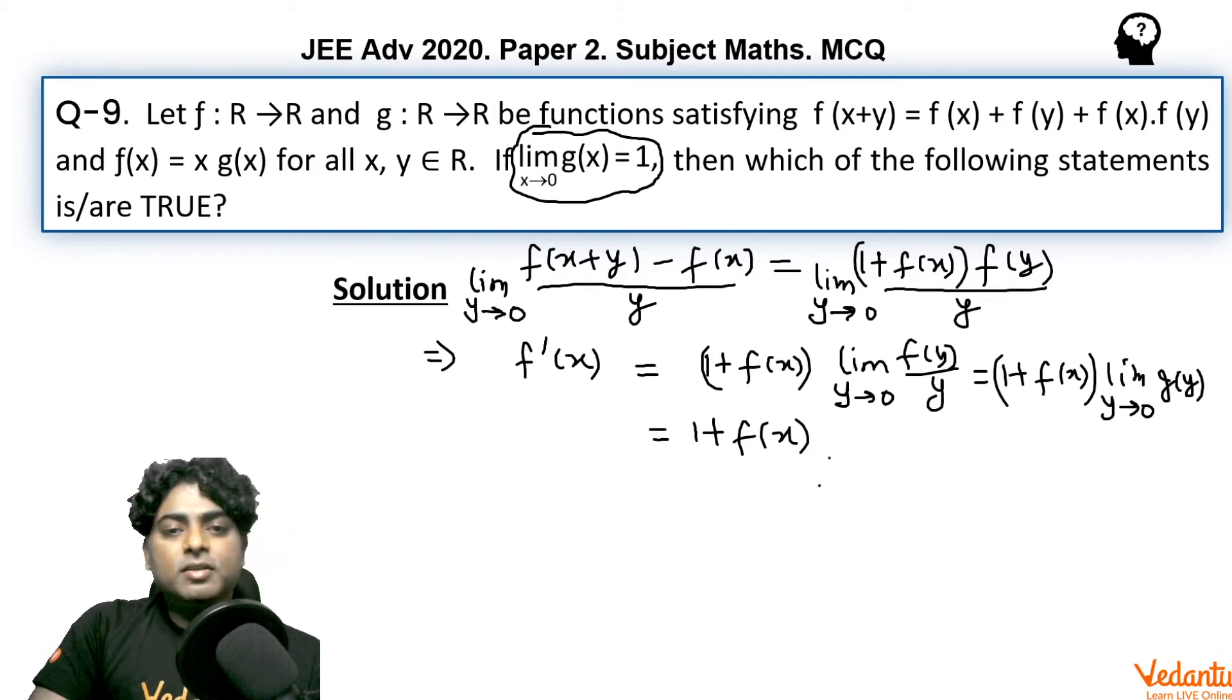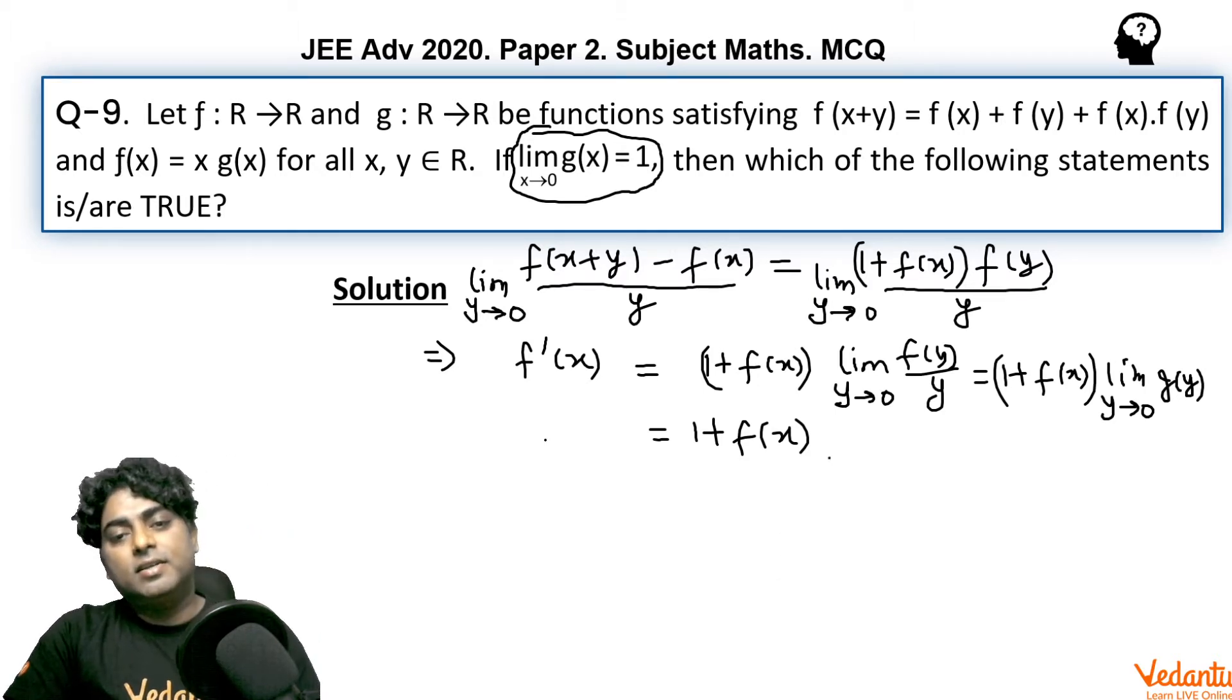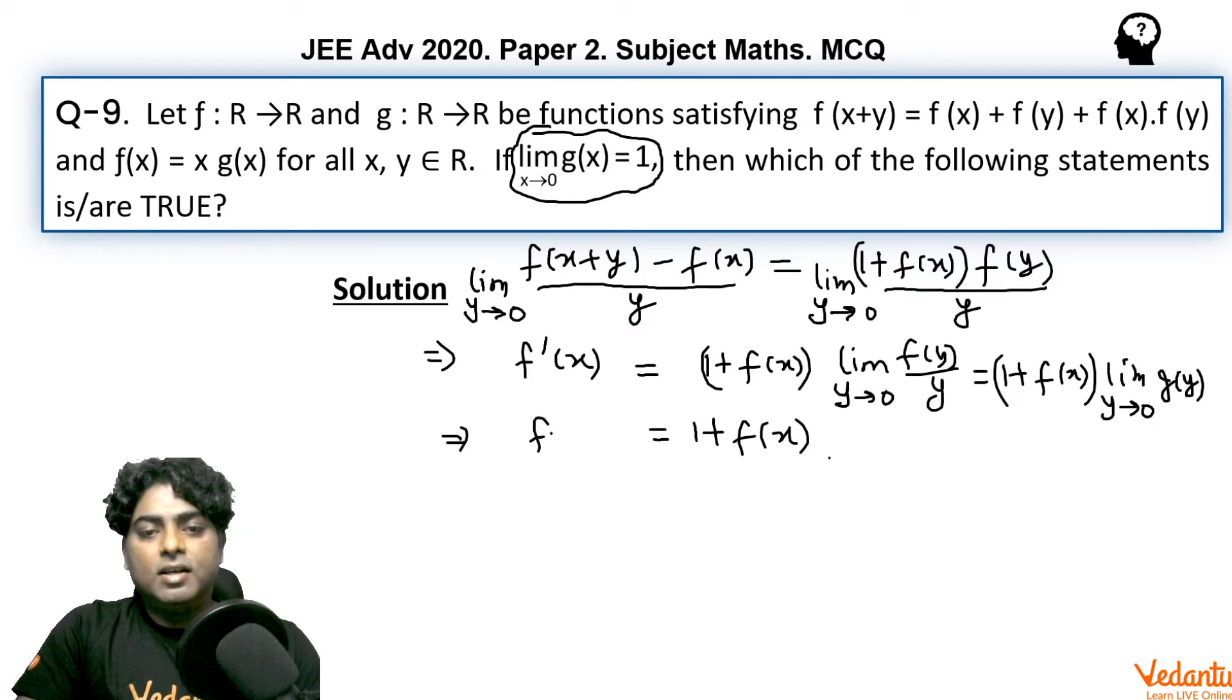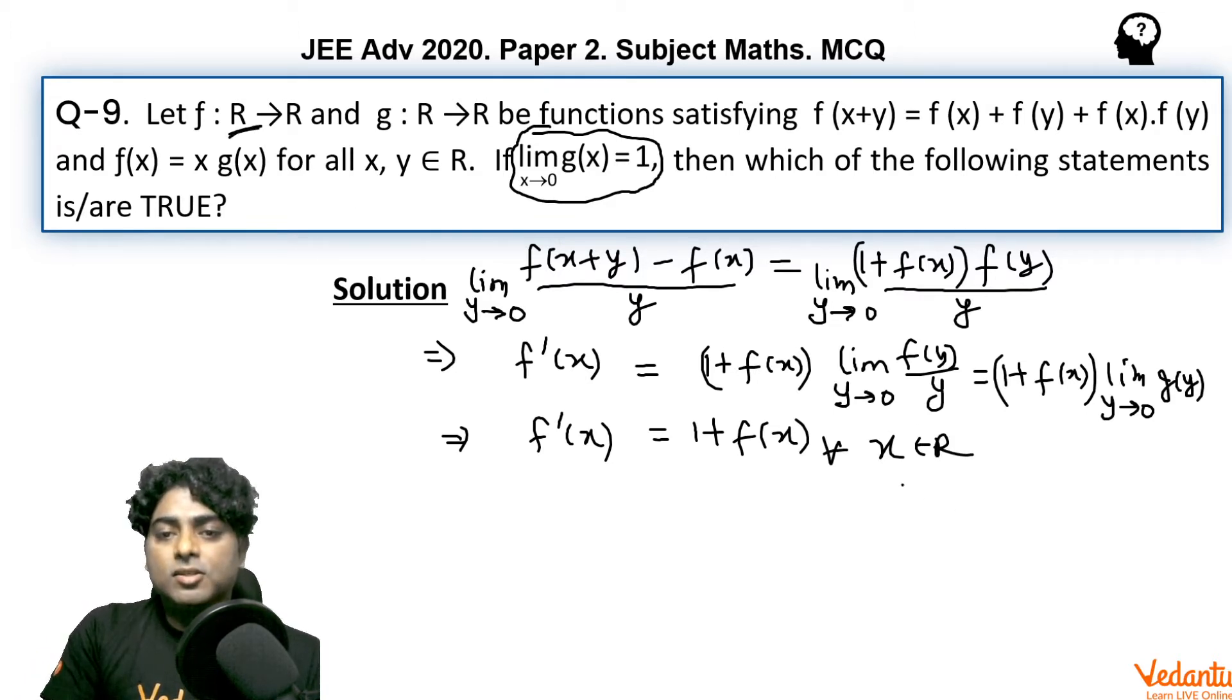From here directly we can say that f'(x) = 1 + f(x) for all x belongs to R, and f is defined everywhere. So f'(x) is defined everywhere, f is differentiable everywhere. So option A must be correct.